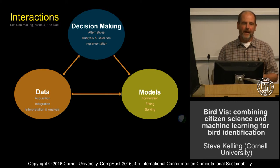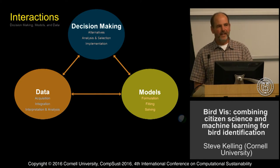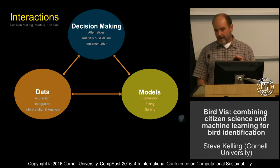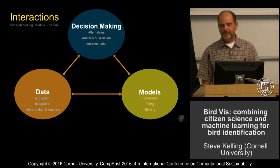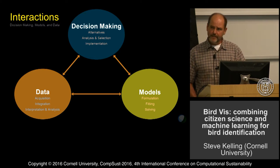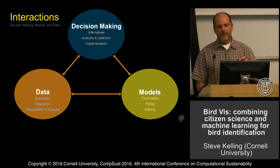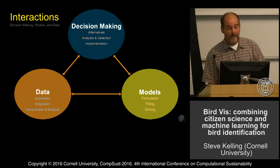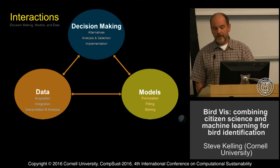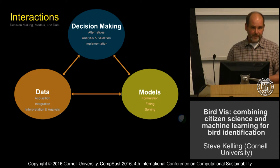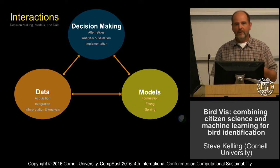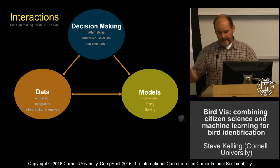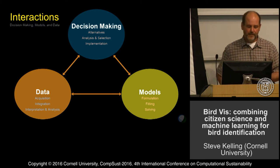What we did was we started to think about using a computational sustainability approach. This is a slide from Carla about how we can build a tool that would automatically identify images of birds to species. To do this, what's required is a combination of interactions between the data and the ability to collect enough data and integrate that, the creation of models that would allow us to make more accurate predictions, and then the decision-making — vetting the models and the data to see how to improve either the models or the data. These interactions go back and forth so the entire system is constantly in flux.